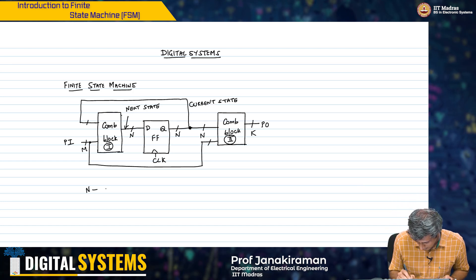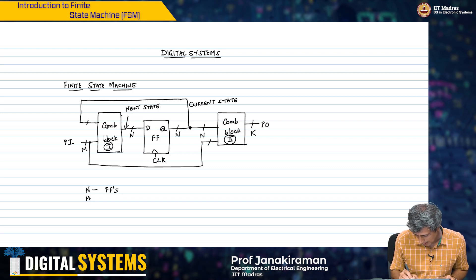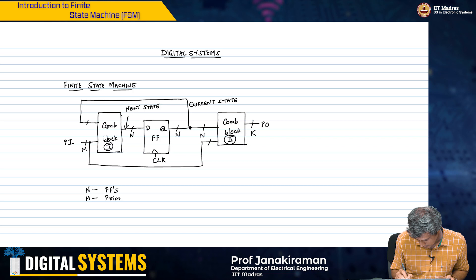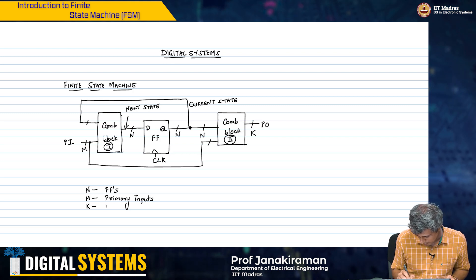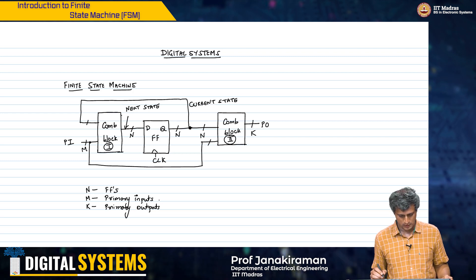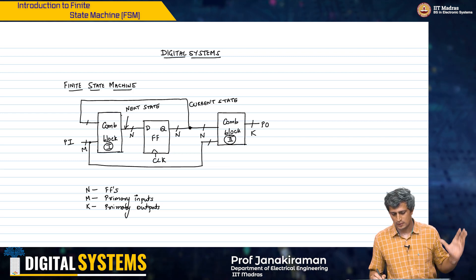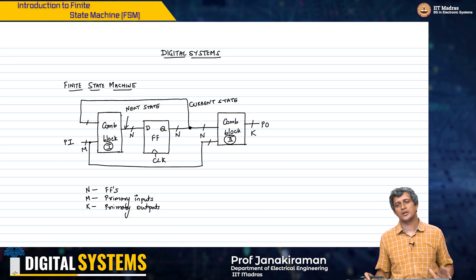So I have n flip-flops, m primary inputs, and k primary outputs. This is essentially the specification of the system in general.